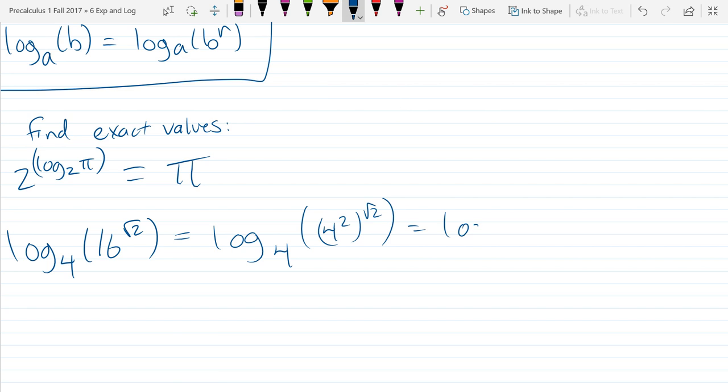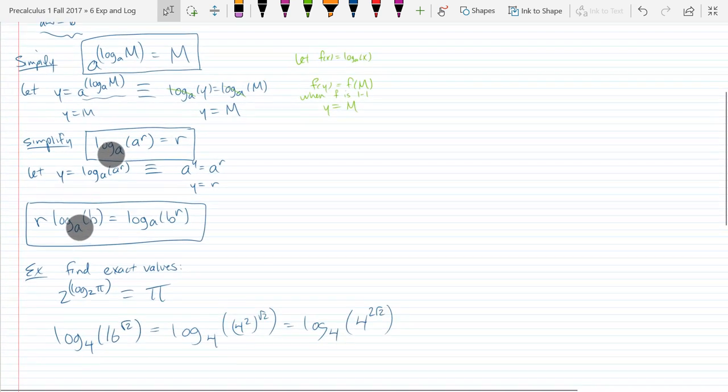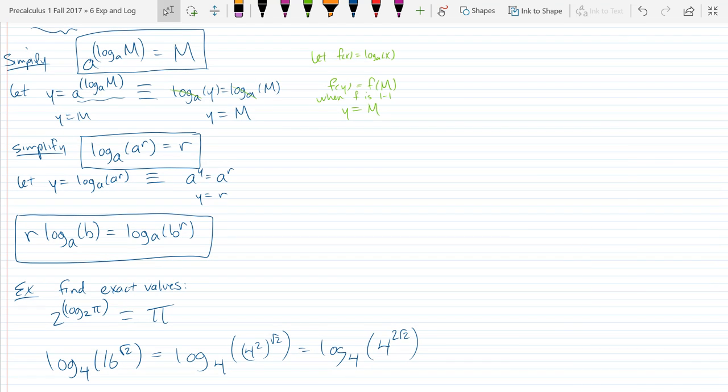So we got a power of a power. What do we do here? Multiply. So powers of powers are products. We got log base 4 of 4 to the 2 times square root 2. So once we have this situation, which of these three identities do we use? 1, 2, or 3? It's number 2. So our base is 4, base is 4. So the log basically completely cancels out, and we're left with that exponent only. So we got 2 square root 2 is our final most simplified form.